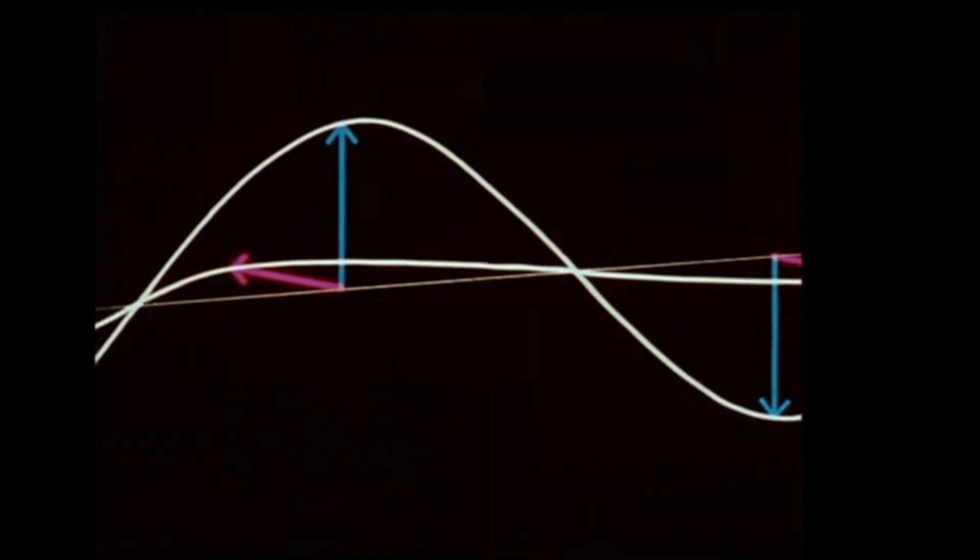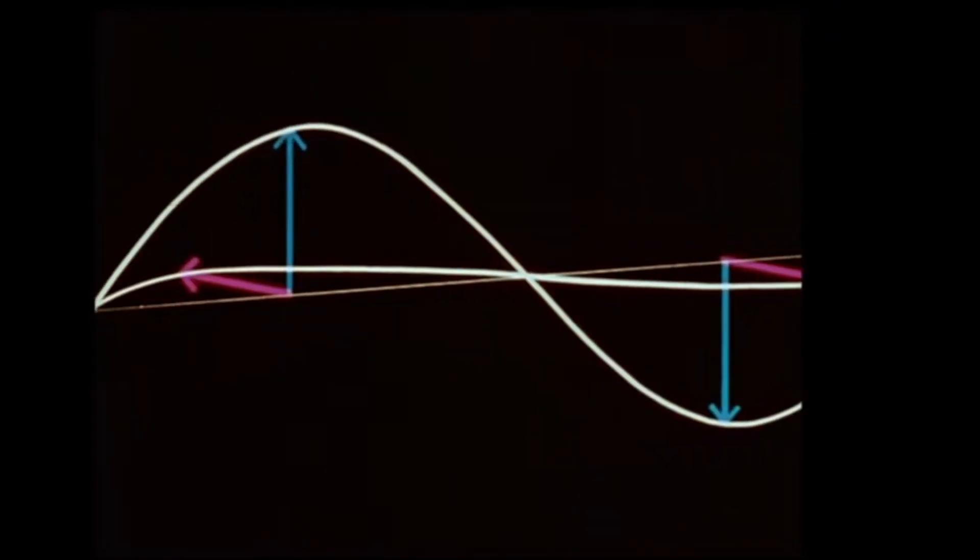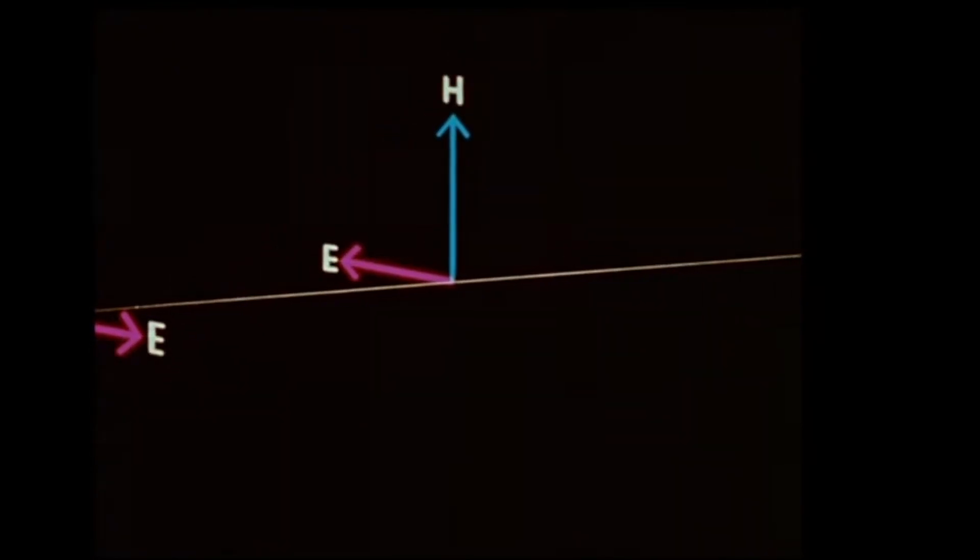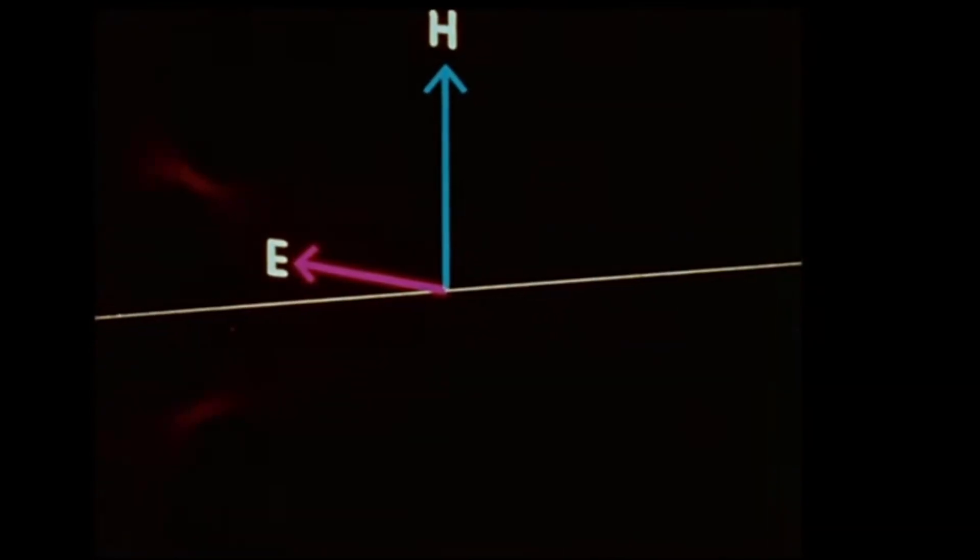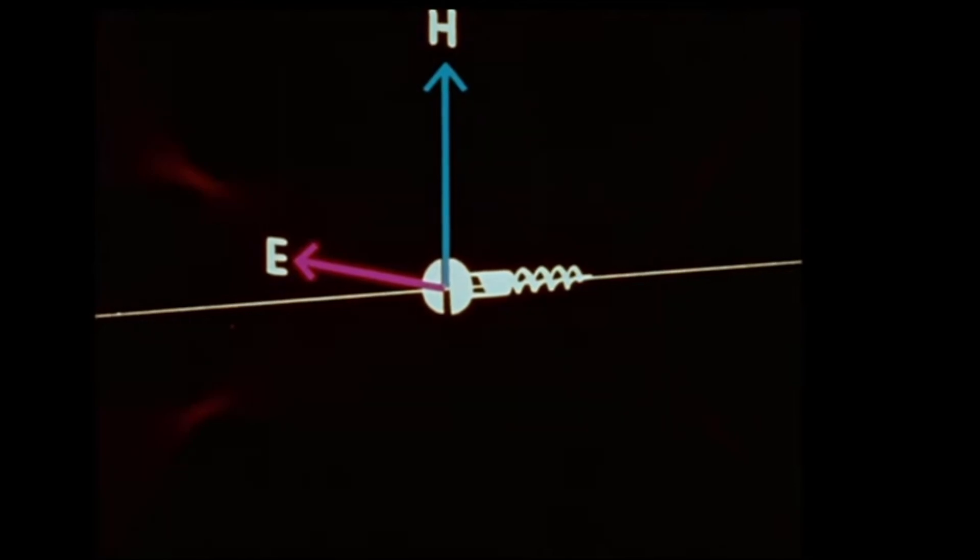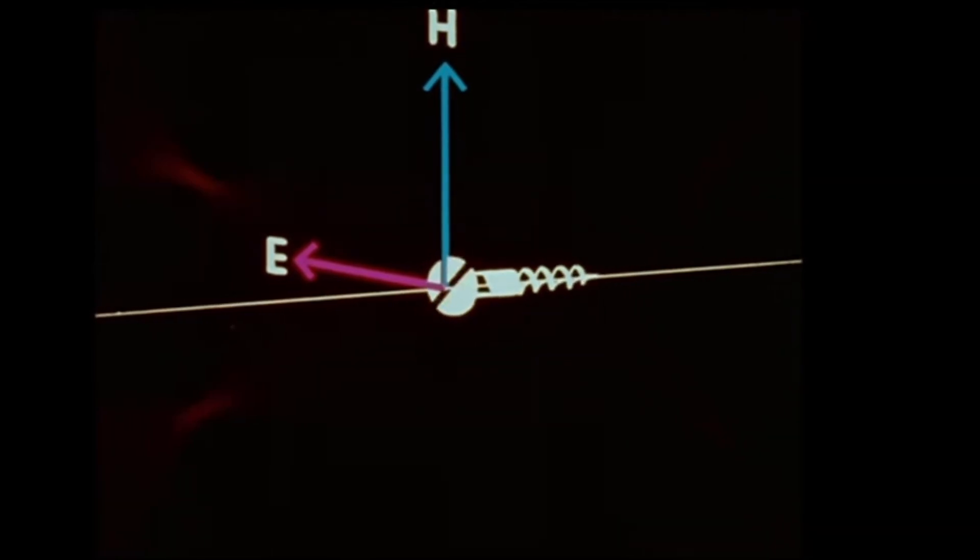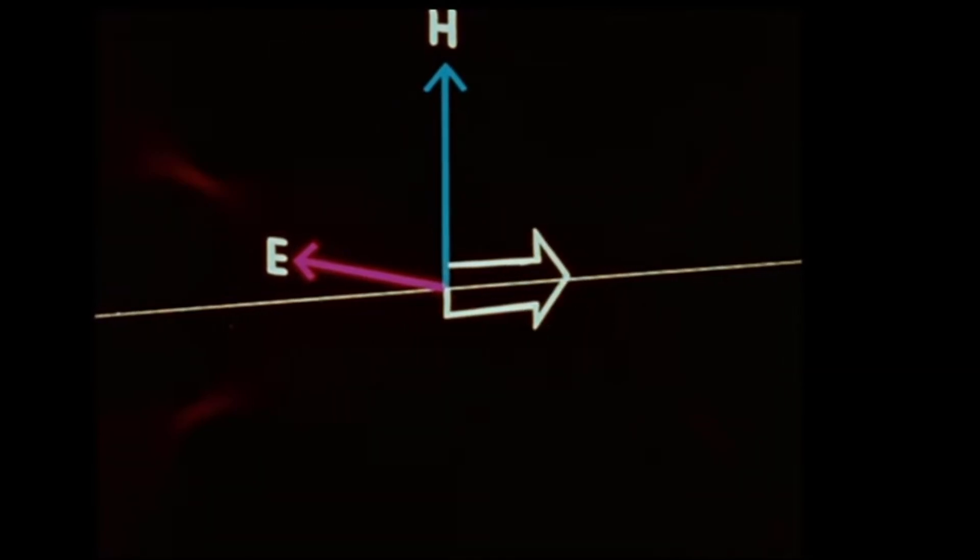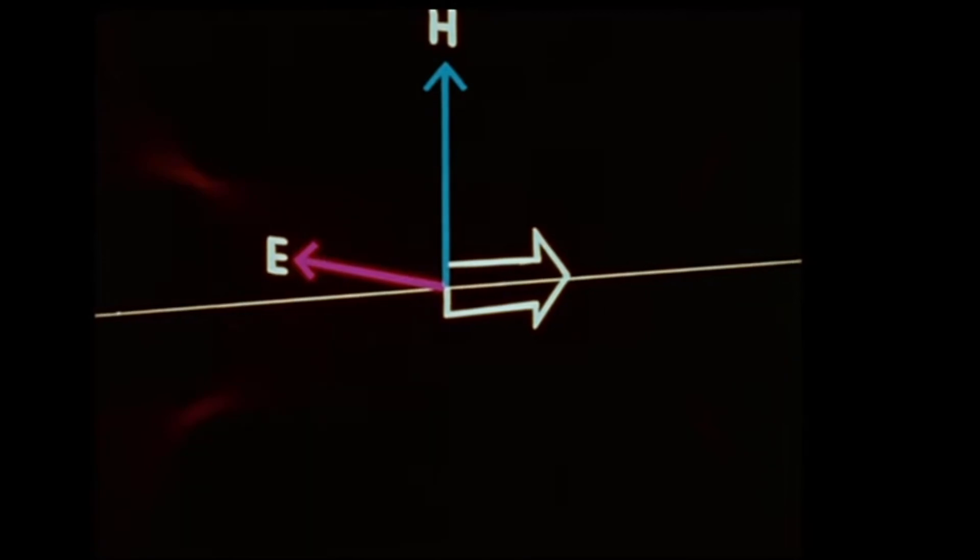The direction in which the E and the H wave pattern propagates is determined by a simple rule. To apply this rule, we use any two vectors. Imagine a corkscrew action. If we turn from the E vector to the H vector through the shortest distance, the screw has advanced in the direction of propagation. This is known as Poynting's vector rule.